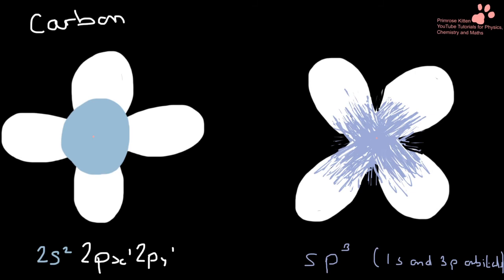And then we have four identical sp3 orbitals. So instead of having this s orbital and these p orbitals, we have four identical sp3 orbitals. And these are what can form our sigma bonds.